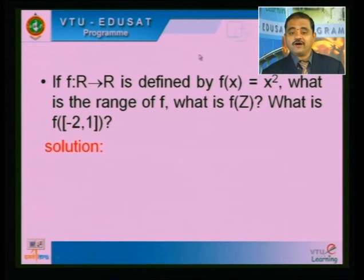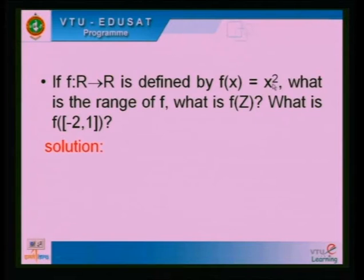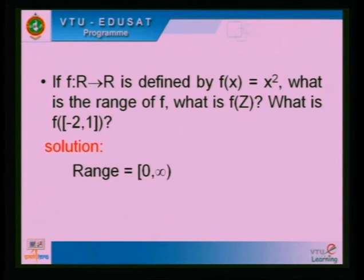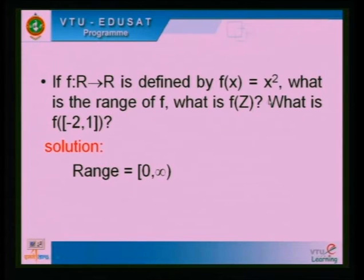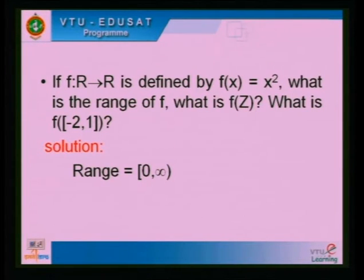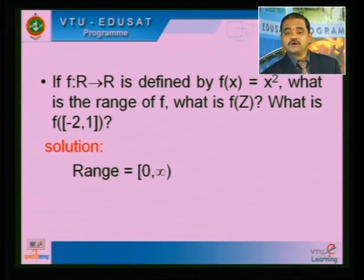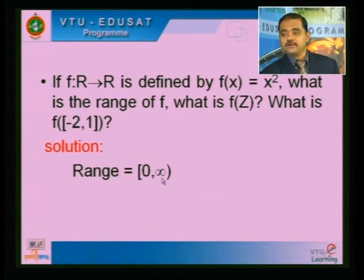Since the function is defined as F(x) = x², in the codomain you will have only positive numbers — even if x is negative, squaring gives a positive result. So the range of F is [0, ∞). Zero is included, infinity is not included — open bracket at infinity.